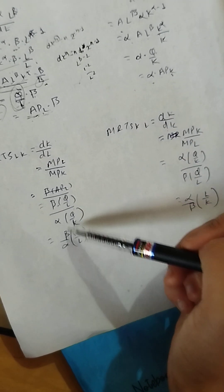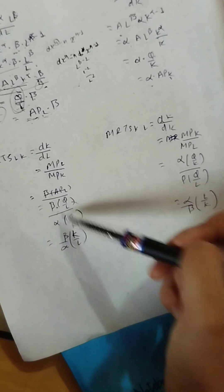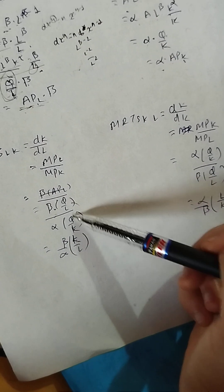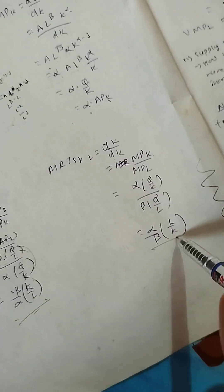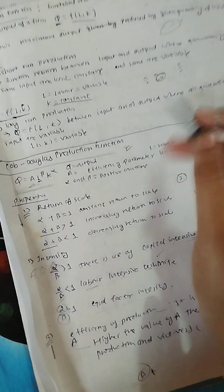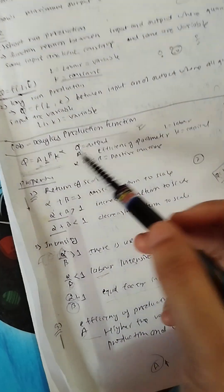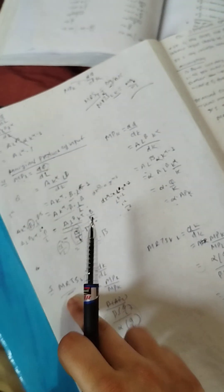Then all alpha terms will come. For the exam, we have returns to scale. If alpha plus beta equals 1, it is constant returns to scale. If greater than 1, it is increasing returns to scale. If less than 1, it is decreasing returns to scale. This is a 5-mark question for the exam.